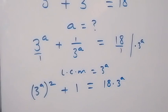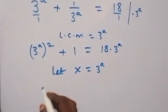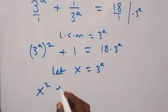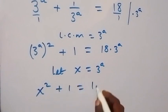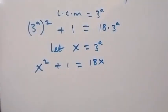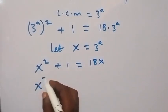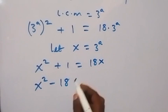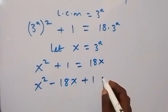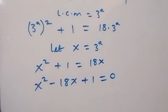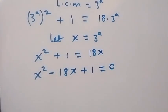From here, let's use a letter to represent 3 raised to power a. Let x equal 3 raised to power a. Then this becomes x squared plus 1 equals 18x. Bringing 18x to the left side to form a quadratic equation, we get x squared minus 18x plus 1 equals 0.